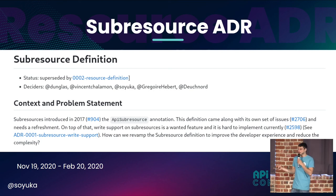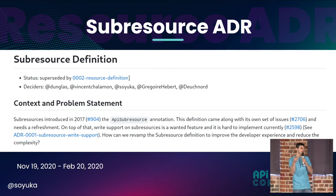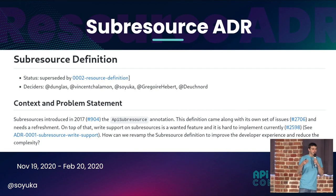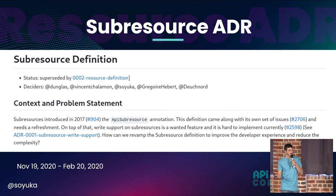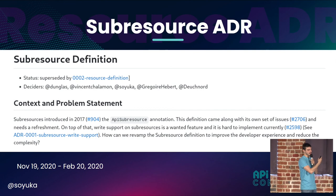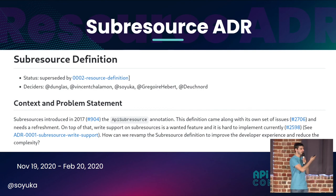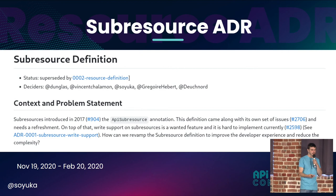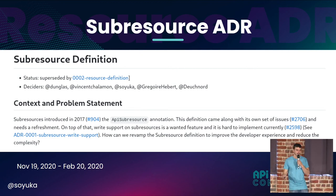An architectural decision record is a document where you say we have a context and a problem. Here, it was that sub-resources introduced in 2017 had issues — we had no write support and a poor developer experience.